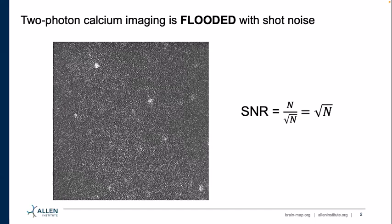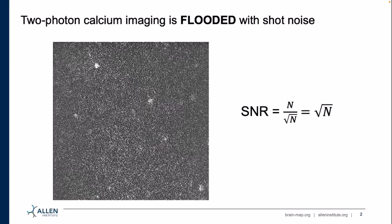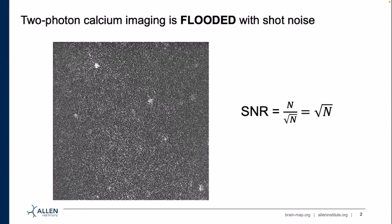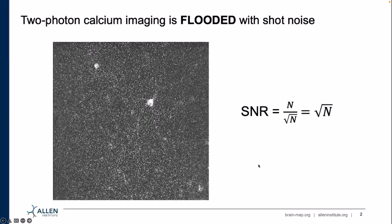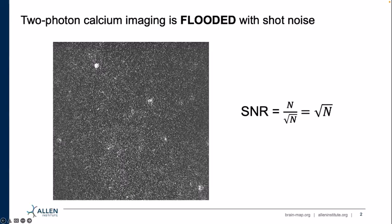As many of you know, noise is a huge issue in systems neuroscience. We are tackling neurons that are hidden in a skull and hard to reach. Any method we use to record neurons is prone to measurement errors. Two-photon calcium imaging in particular is flooded with shot noise. Here I have an example of a 30 Hz movie recorded at the Allen Institute, representative of typical experiments. The first thing you notice is all this speckle across the entire field of view.